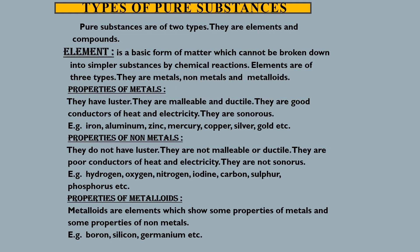An element is a basic form of matter which cannot be broken down into simpler substances by chemical reaction. Elements are of three types: they are metals, non-metals, and metalloids. Let us just brush through the properties of these.